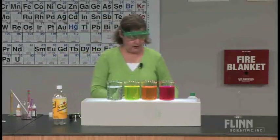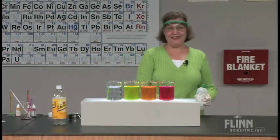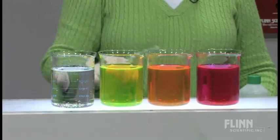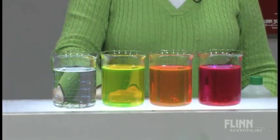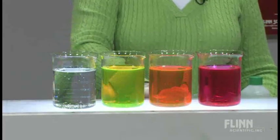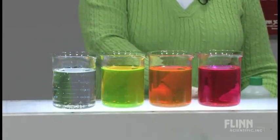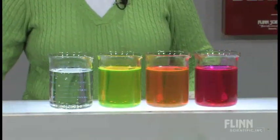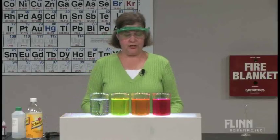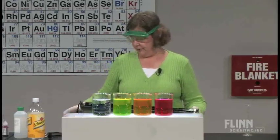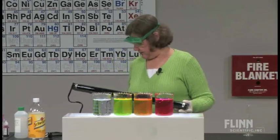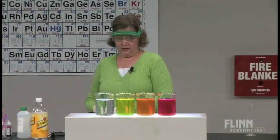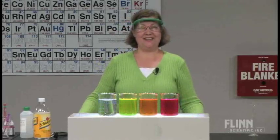First, let's note the colors under white light. The quinine is colorless in visible light. The fluorescein is its characteristic yellow-green color. The eosin is a bright, bright orange, and the rhodamine is fuchsia or pink-red-violet. Now the question is, what does that look like under black light? Let's dim the lights.